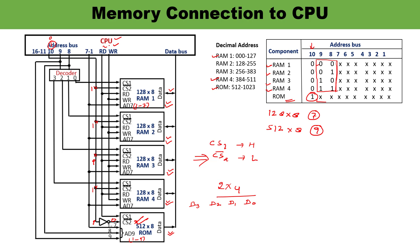The read and write outputs from the microprocessor are applied to each RAM, because RAM has read and write capability. ROM does not have a read/write input, so read and write lines are connected to all four RAMs only. Out of 16 address bus lines, only 10 lines are used in this system; the remaining lines 11 through 16 are not used in this particular case.